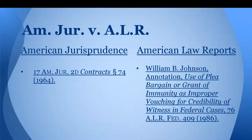Once you look at the citation, though, it's more obvious that these are different types of sources. American Jurisprudence — which we often call AmJur because of the Bluebook abbreviation — is an encyclopedia of American law, so it falls under Rule 15, the same way a dictionary or a treatise would. American Law Reports, on the other hand, contains articles that analyze a case or legal concept in depth. It is updated much more often, and is therefore considered a periodical.